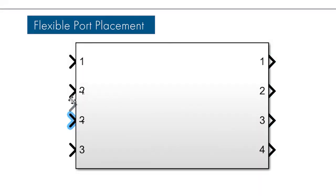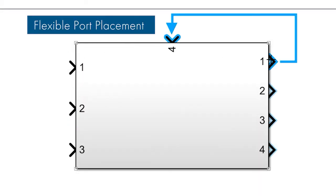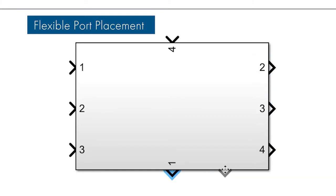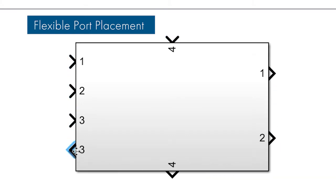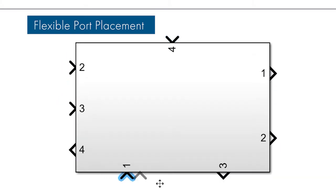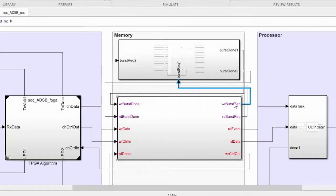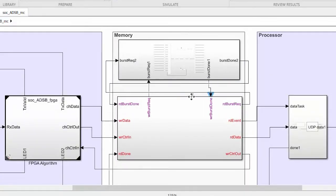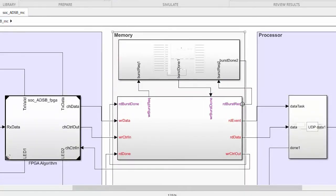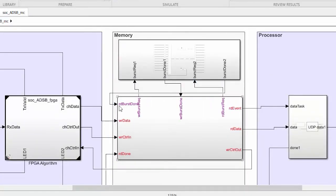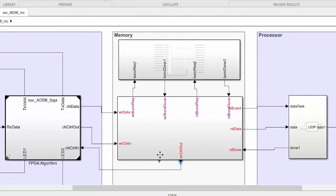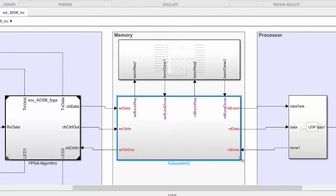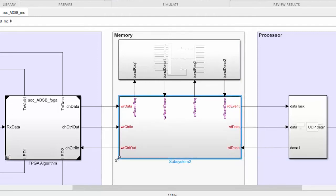In Simulink, you can now locate ports on any side in any order on subsystems, subsystem references, model references, and state flow charts. This gives you more flexibility in how your diagram is laid out and makes it easier to reduce the number of overlapping signal lines in your model.